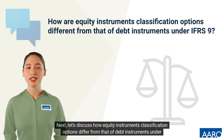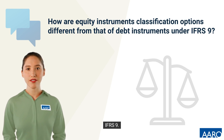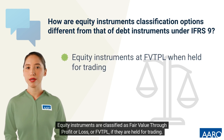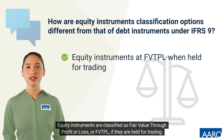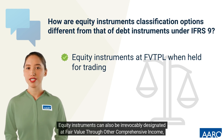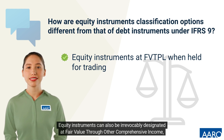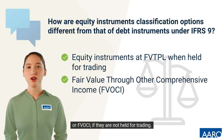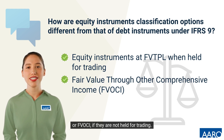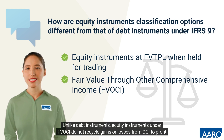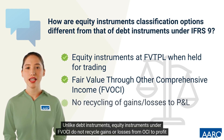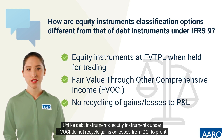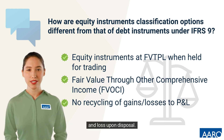Let's discuss how equity instruments classification options differ from that of debt instruments under IFRS 9. Equity instruments are classified as fair value through profit or loss, or FVTPL, if they are held for trading. Equity instruments can also be irrevocably designated at fair value through other comprehensive income, or FVOCI, if they are not held for trading. Unlike debt instruments, equity instruments under FVOCI do not recycle gains or losses from OCI to profit and loss upon disposal.